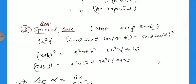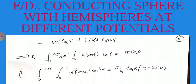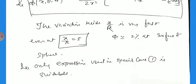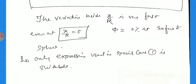In the general case, the full solution can be written as φ(x, θ, φ) = (3VR²/2) × [terms involving Legendre polynomials], which represents about the first two terms of the expansion for the sphere. This is all about this problem. Thank you very much.